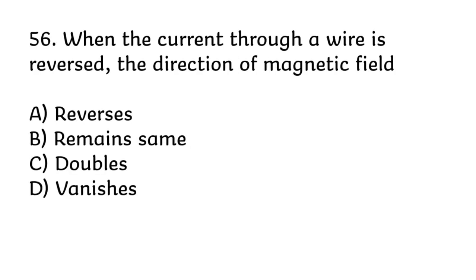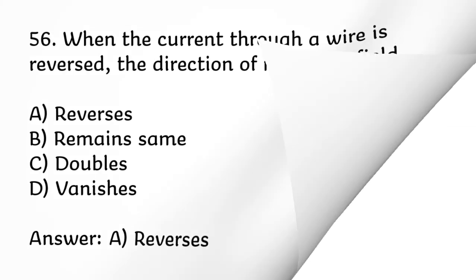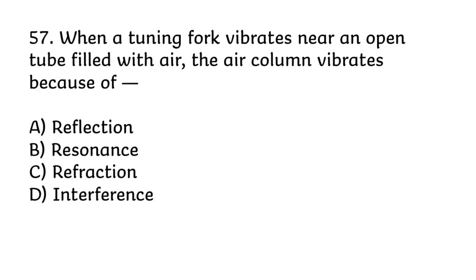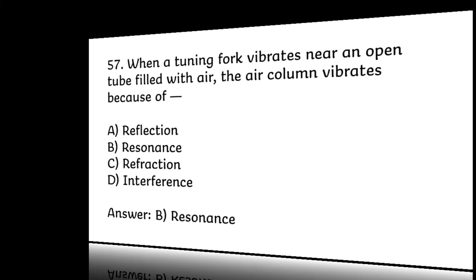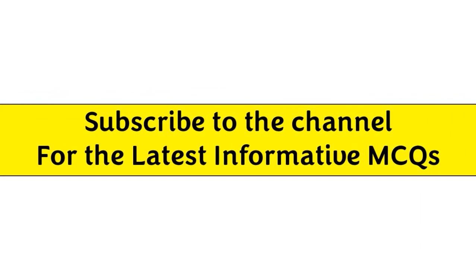When the current through a wire is reversed, the direction of magnetic field? Correct answer is A, reverses. When a tuning fork vibrates near an open tube filled with air, the air column vibrates because of? Correct answer is B, resonance.